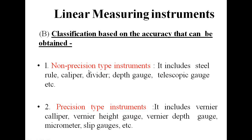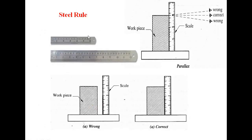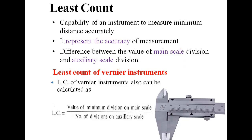Non-precision instruments are less precise than precision type instruments. The steel rule is a non-precision instrument — its problem is that it will give a parallax error. If your eye is exactly perpendicular to the distance marking it will give the correct result, but looking from above or below gives the wrong result. So this is a non-precise instrument.